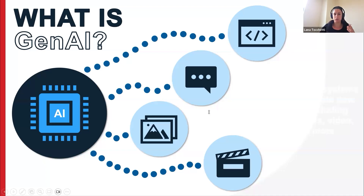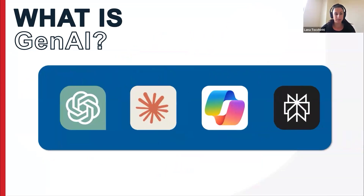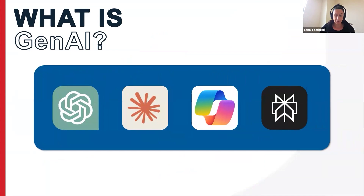So first up, let's talk a little bit about what Gen AI is. Gen AI, or generative AI, refers to artificial intelligence systems that can create new content — this includes text, images, video, code, and loads more. You're probably familiar with some of these models such as ChatGPT, Claude, Microsoft Copilot, or even Perplexity. They're all trained on huge amounts of data and generate human-like responses to prompts or questions that you give them.